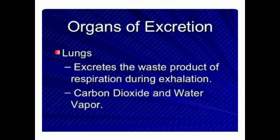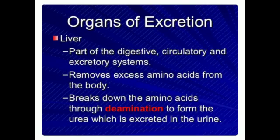Organs of excretion: first is the lungs, which excrete the waste products of respiration during exhalation — carbon dioxide and water vapor. Second is the liver, which is part of the digestive, circulatory, and excretory systems. It removes excess amino acids from the body and breaks them down through deamination to form urea, which is excreted in the urine.